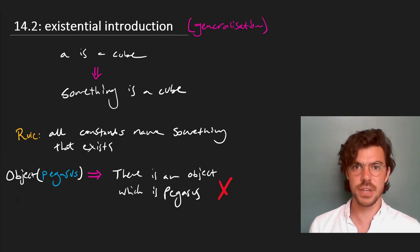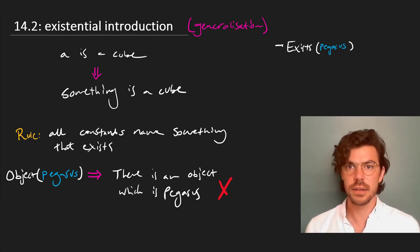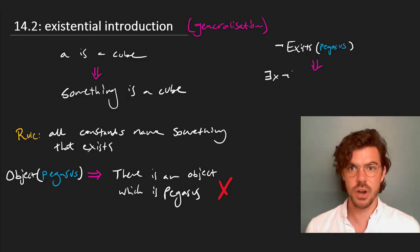Incidentally, this is also why we treat the existential sign as a quantifier and not as a predicate. Imagine what would happen if we treat it exists as a predicate. We would say Pegasus exists, and then we would want to negate this, so we would say that Pegasus doesn't exist,